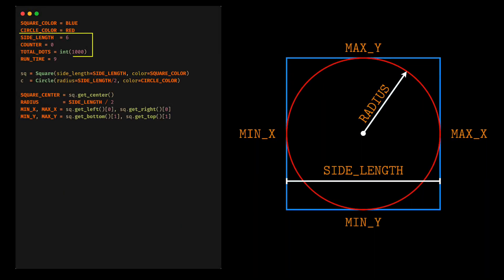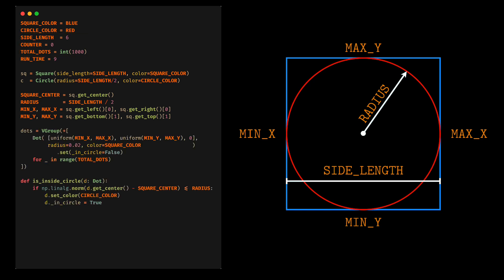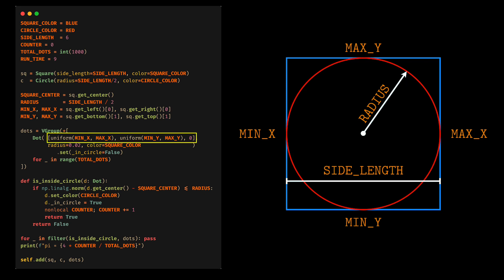I will define a counter, which will increment when a point is positioned inside the circumference. I will also define the duration of the animation and the number of points. The rest is easy to understand. Let's define the points inside the square — we can use the uniform function from the random package.